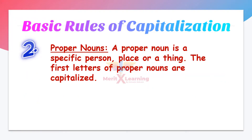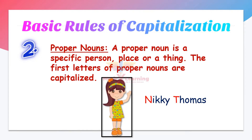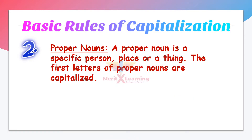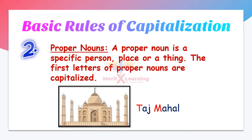Rule number two: proper nouns. A proper noun is a specific person, place, or thing. The first letters of proper nouns are capitalized. For example, this is a girl and her name is Nikki Thomas, so the first letter of her first name is capitalized. Number two: this is Taj Mahal. This is a proper noun, so the first letter of 'Taj' and the first letter of 'Mahal' are capitalized.